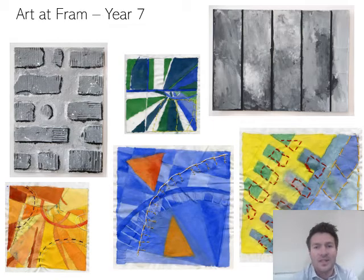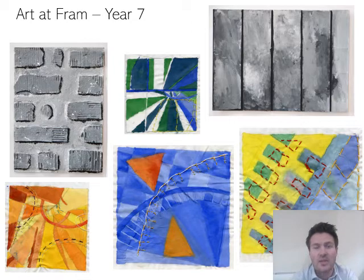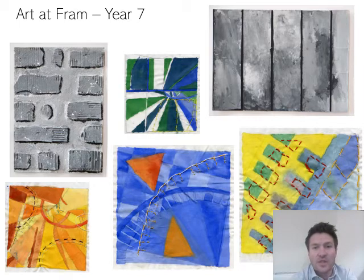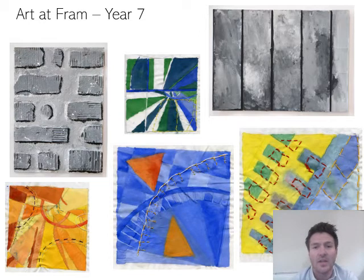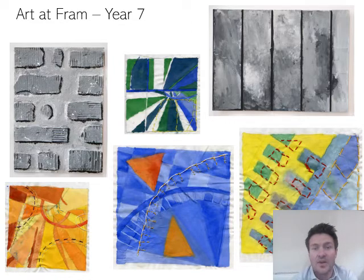On this slide you can see the sorts of things that we do in year seven. We divide year seven up into three projects. In the first term we explore lots of ideas and techniques relating to tone and texture. In the second term we explore techniques and artists relating to line, shape and colour. And in the third term we explore artists and techniques relating to space and form.